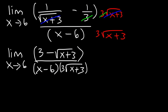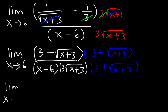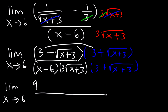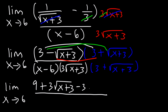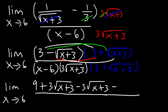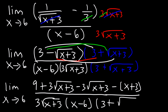Next, let's multiply the top and the bottom by the conjugate, which is 3 plus the square root of x plus 3. So on the top we need to FOIL. 3 times 3 is going to be 9. And then if you multiply those two, it's going to be positive 3 square root of x plus 3. Now let's multiply these two terms — that's going to be negative 3 square root of x plus 3. And then the square root of x plus 3 times itself is simply x plus 3 with a negative sign in front. On the bottom, we have 3 root x plus 3 times x minus 6 times 3 plus the square root of x plus 3.